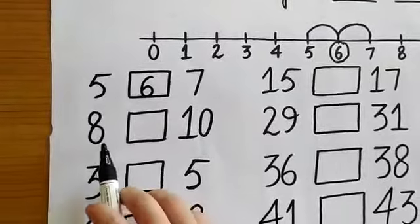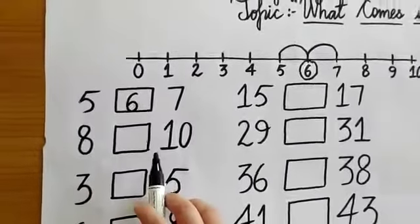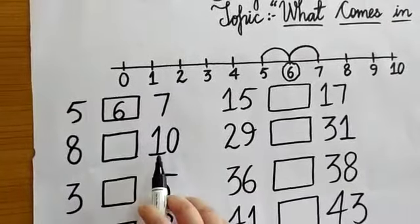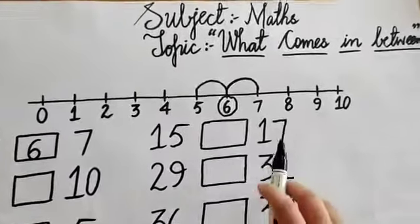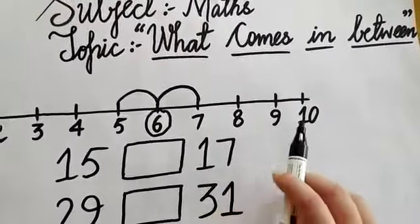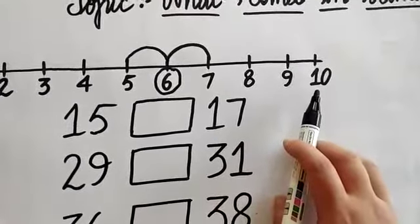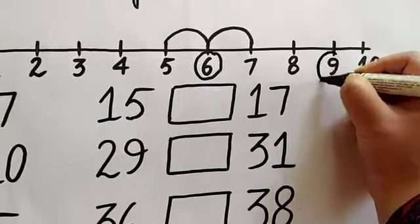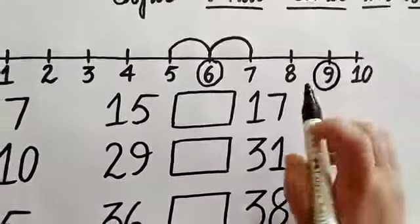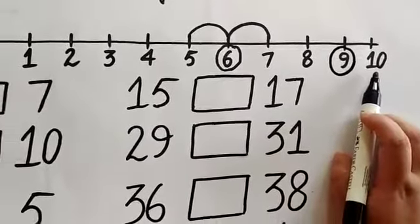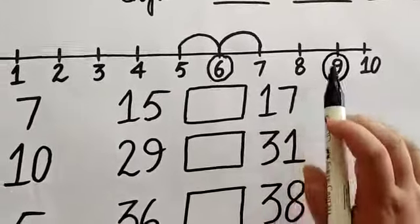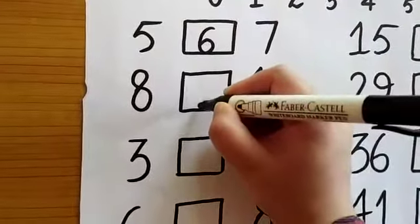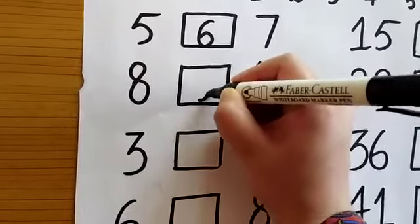Now the next numbers are 8 and 10. Which number will come between 8 and 10? Look on the number line — 8 and 10, which number is in the middle? Yes, number 9. Number 9 is in the middle of 8 and 10, so number 9 will come in between 8 and 10. I will write it here: number 9.